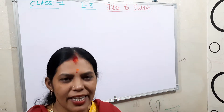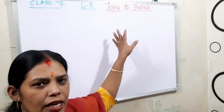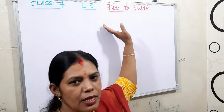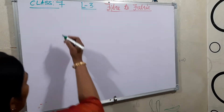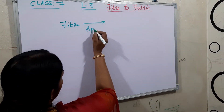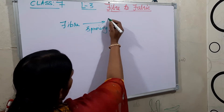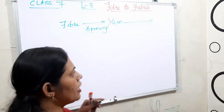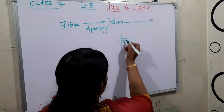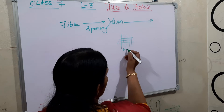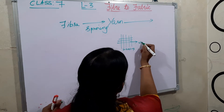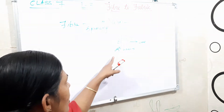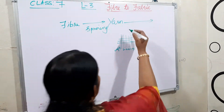Continuing with the next topic. In the previous class you learned about fiber — fiber is a thread-like substance. By spinning, meaning twisting, fiber is made into yarn. Then this yarn is arranged horizontally and vertically: horizontally is known as the warp and vertically is known as the weft. Arranging the yarn in this way is the process known as weaving.